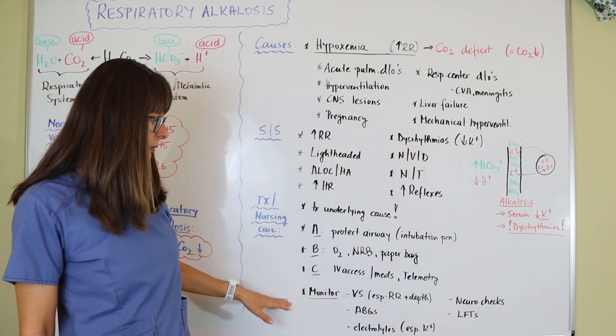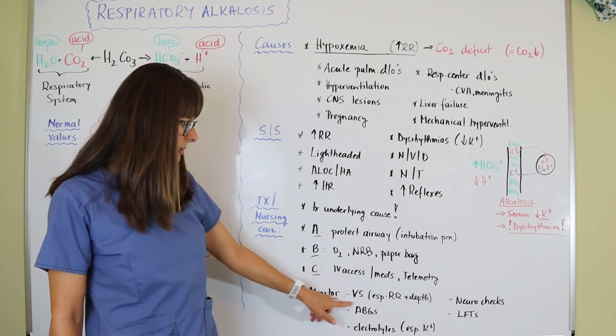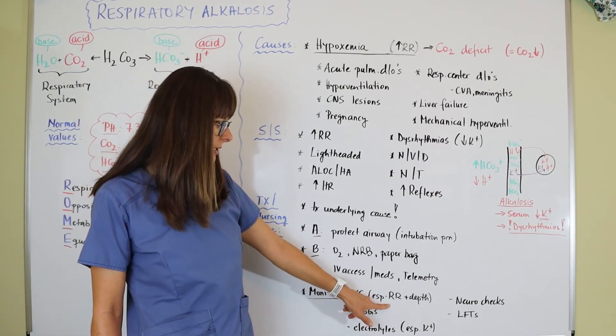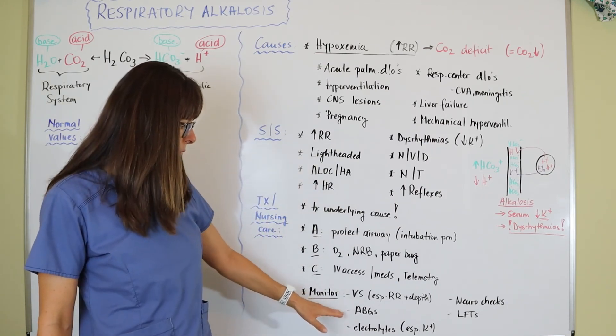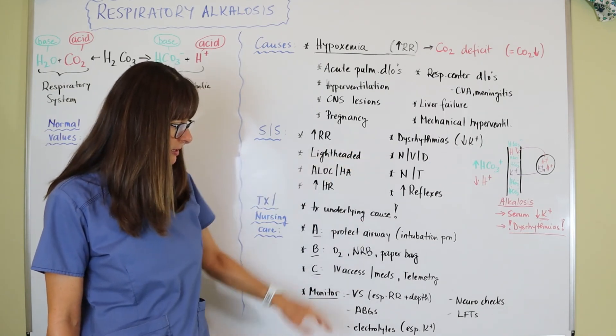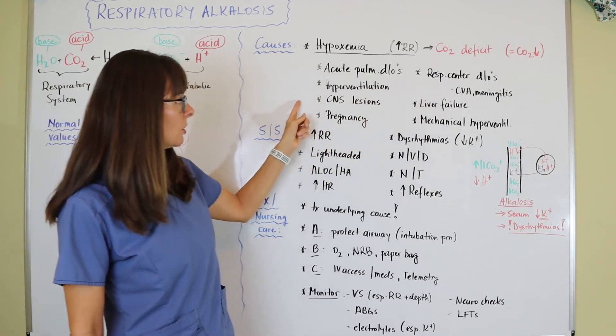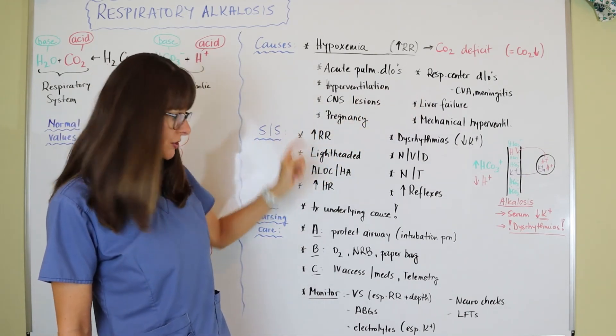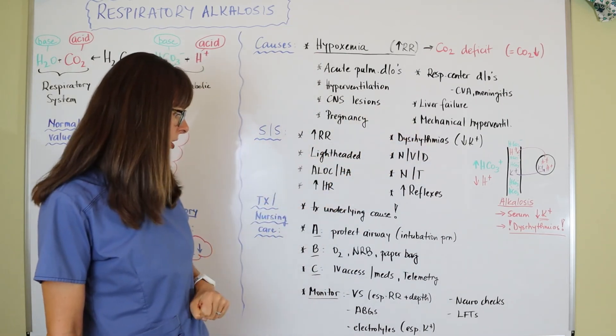We want to monitor their vital signs very closely, especially the respiratory rate and depth because that's the underlying cause. Keep a close eye on their ABGs, on their electrolytes because of the potassium, do neuro checks if one of those underlying causes is due to some neurologic disorder, and then liver function if liver failure is the cause.